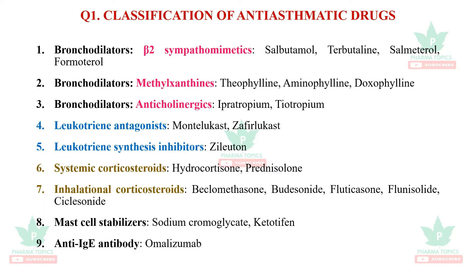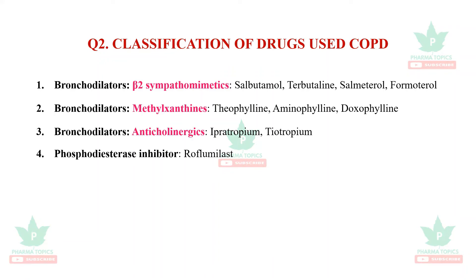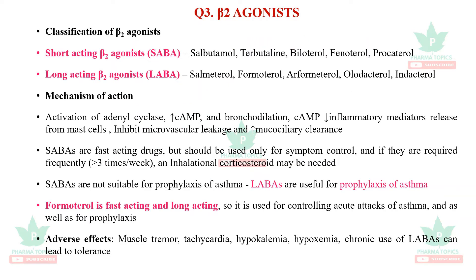Question number two is classification of drugs used in chronic obstructive pulmonary disease. It is very similar to asthma treatment but includes only four classifications. The bronchodilators are: beta-2 sympathomimetics — salbutamol, terbutaline, salmeterol, formoterol; methylxanthines — theophylline, aminophylline, doxophylline; anticholinergics — ipratropium and tiotropium; and the phosphodiesterase inhibitor roflumilast.